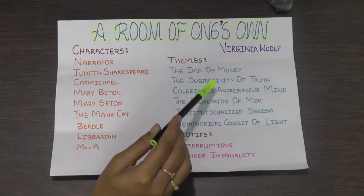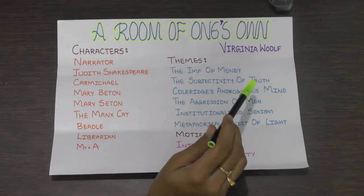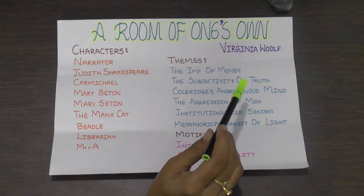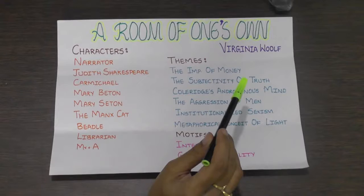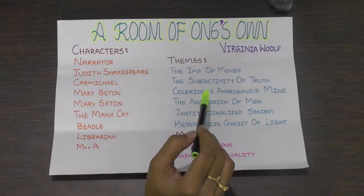The second theme is the Subjectivity of Truth. Woolf argues that even history is subjective. What she seeks is nothing less than the essential oil of truth, but this eludes her and she eventually concludes that no such thing exists. Woolf forces her reader to question the veracity of everything she has presented as truth, and yet she also tells them that the fictional parts of any story contain more essential truth than the factual parts.